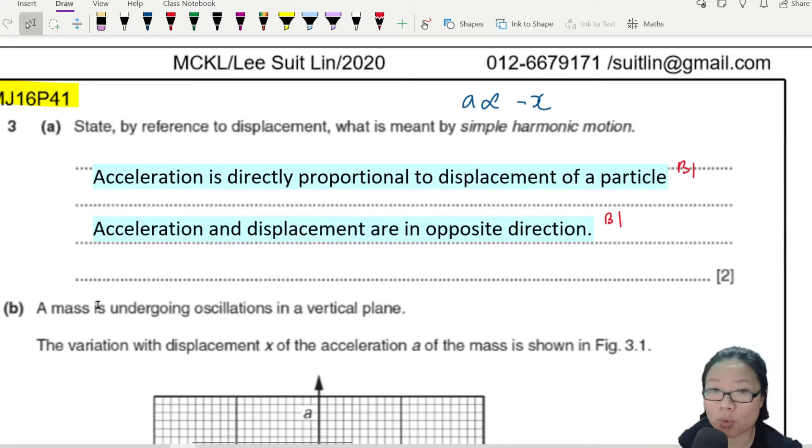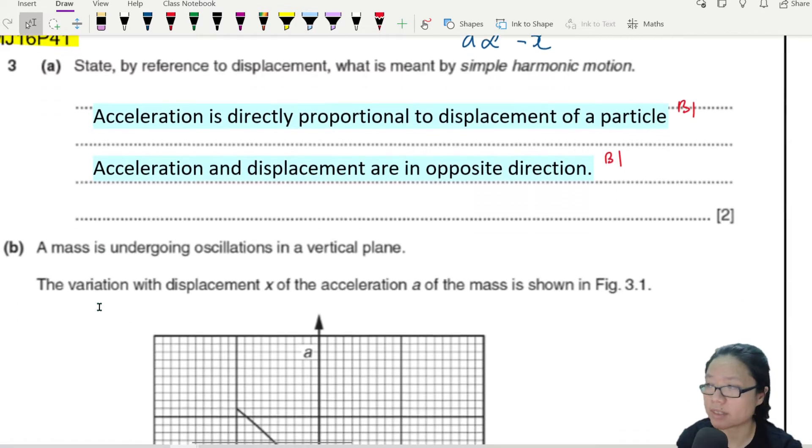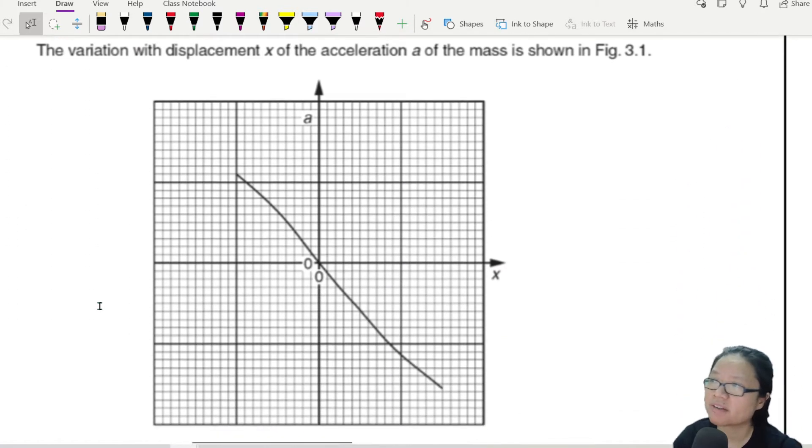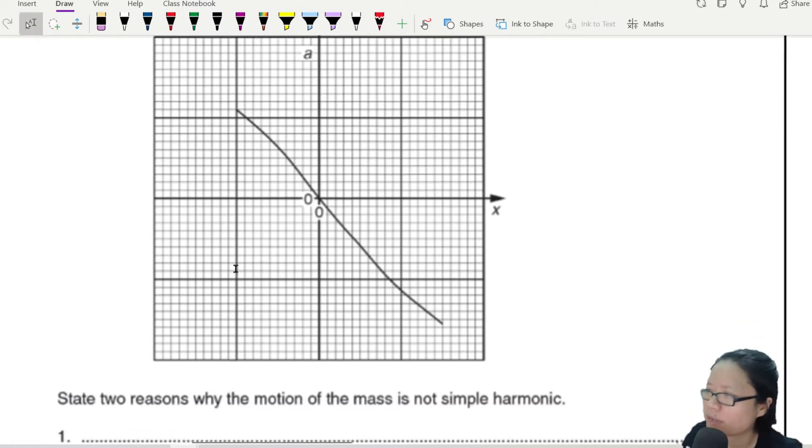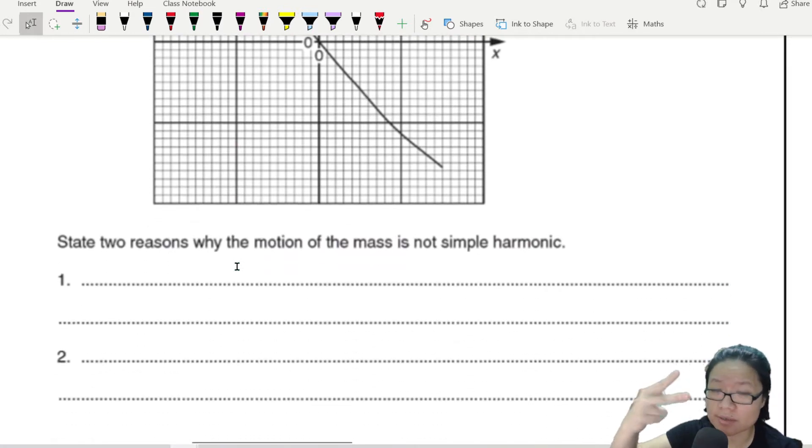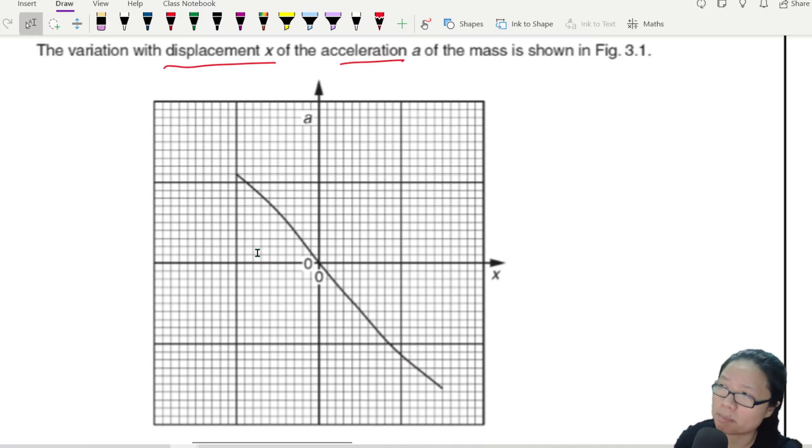A mass is undergoing oscillation in the vertical plane. The variation with displacement x of the acceleration of the mass is shown. Look at this weird looking graph. State two reasons why the motion is not simple harmonic. Or in other words, based on this a against x graph, tell us why you don't think that a is proportional to negative x.